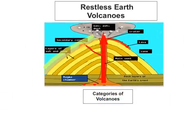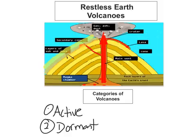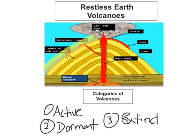There are three different categories of volcanoes: active, dormant, and extinct. Active means the volcano erupts regularly — an example would be Mount St. Helens. A dormant volcano means it hasn't erupted for a long time but may erupt again. Extinct means there has been no eruption in recorded history.